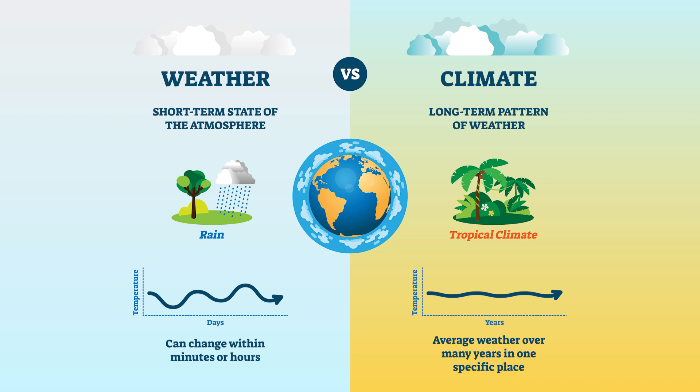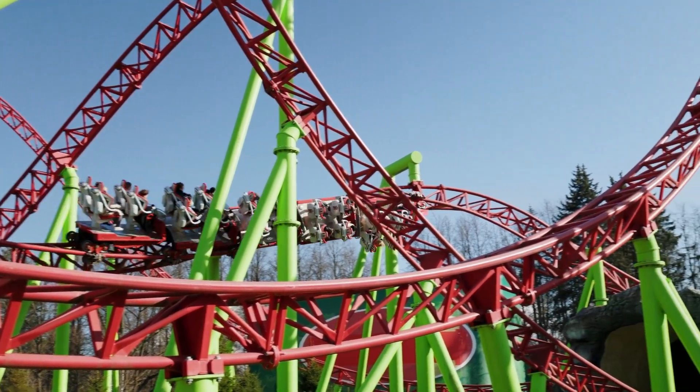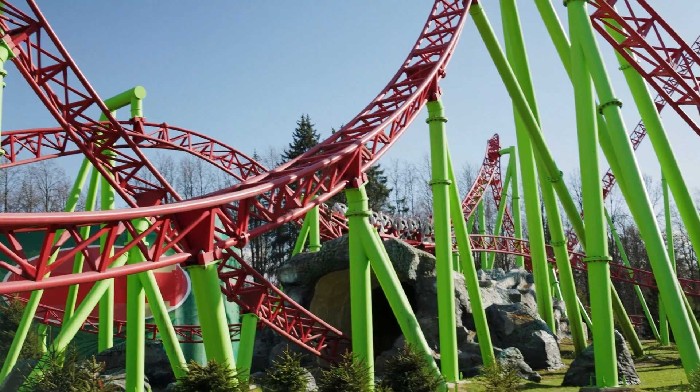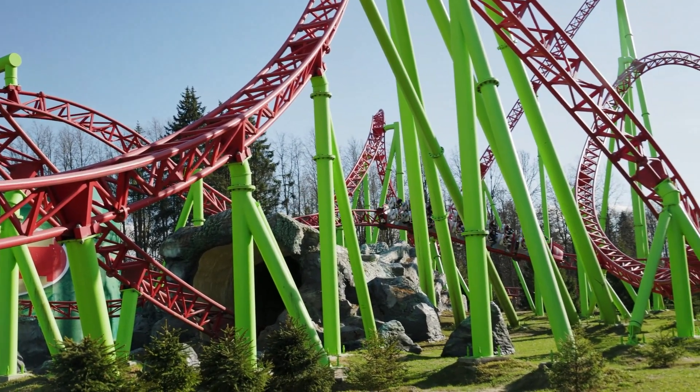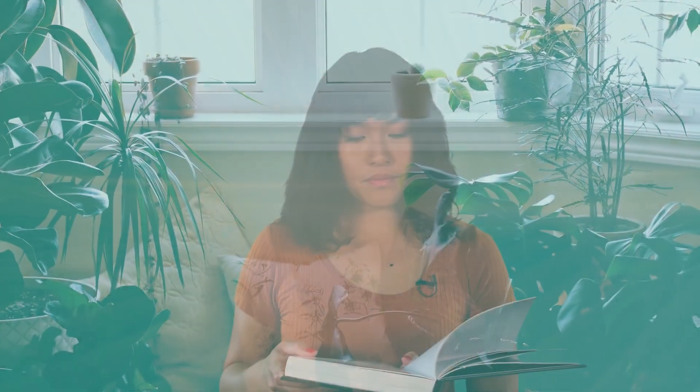It can take a while to notice changes in these average weather patterns. You can think of weather as your mood right now, while climate is your overall personality. Right now, my mood is happy and excited. I'm riding a roller coaster and I can't stop screaming! This is like the weather — it's describing right now! Generally, my personality is quiet. I don't yell often, and I'd rather read a book than go on a roller coaster. This is like climate — it's describing average patterns over time.